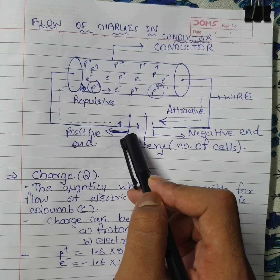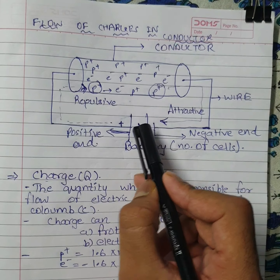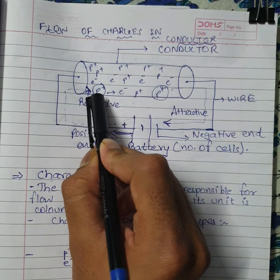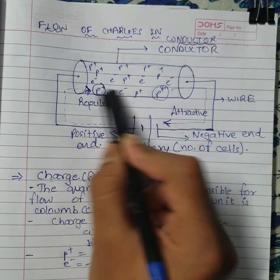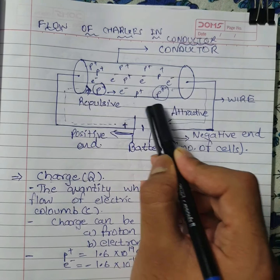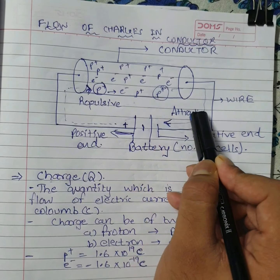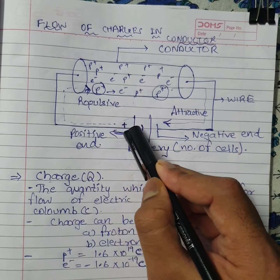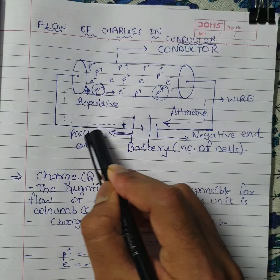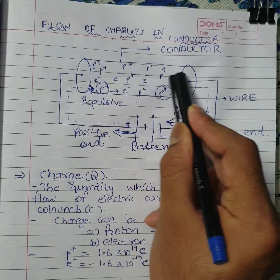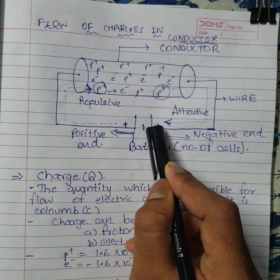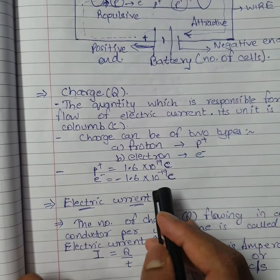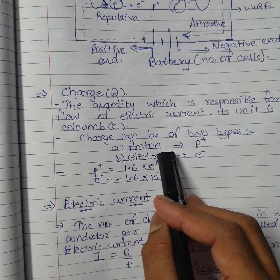How does charge flow? What forces act on a charge to produce electric current? The positive terminal repels the proton. Due to this repulsive force, the proton travels to the opposite end, where an attractive force from the negative terminal pulls it in. This is how conventional charge flows from positive to negative terminal.